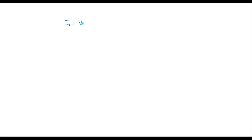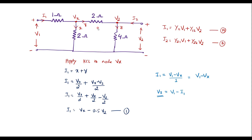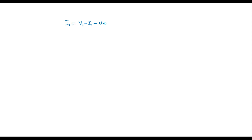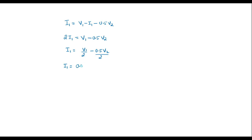Substituting vx = v1 - i1 into equation 1: i1 = (v1 - i1) - 0.5*v2. Rearranging, 2*i1 = v1 - 0.5*v2, so i1 = 0.5*v1 - 0.25*v2. Let me call this equation 2.